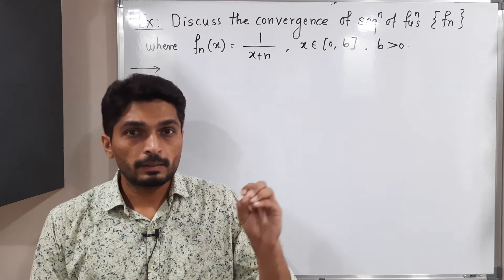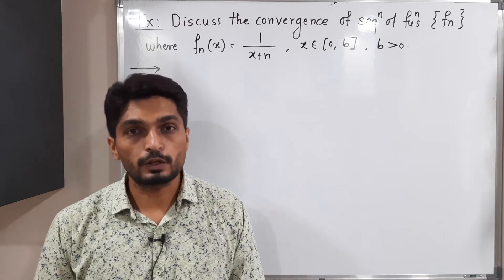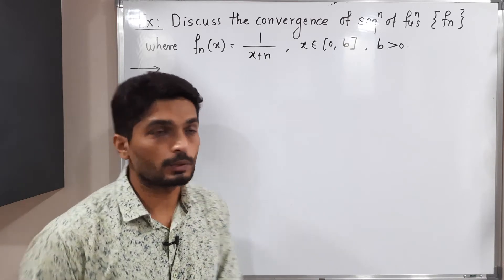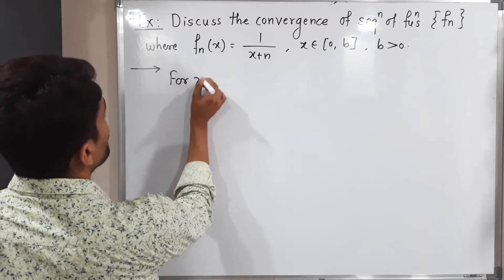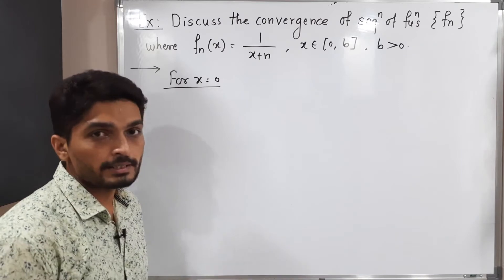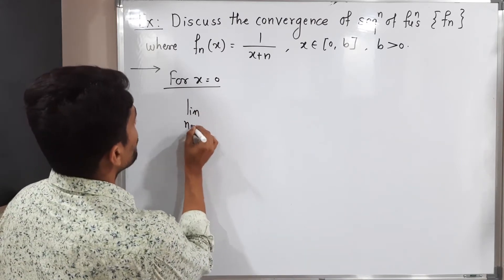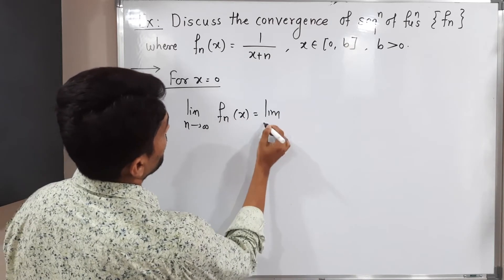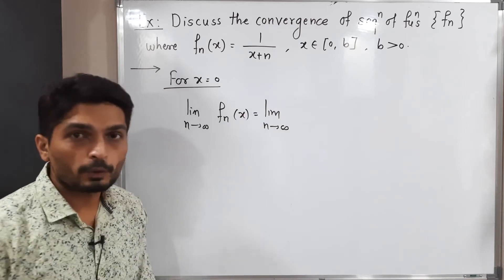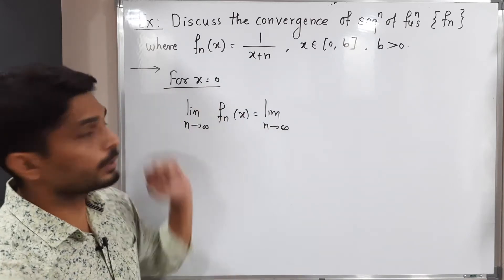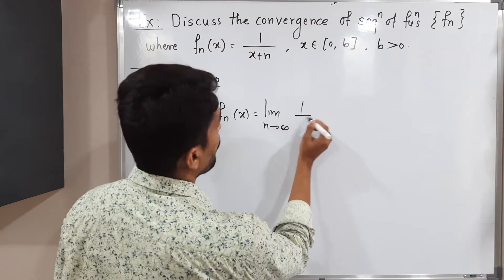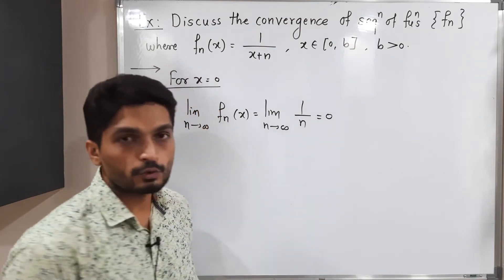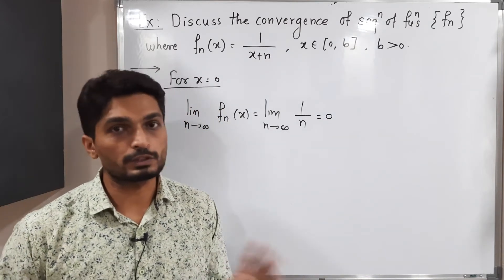We are going to find the limit of that sequence of functions. Let us first discuss the boundary point x = 0. For x = 0, the limit as n tends to infinity of fn(x) equals the limit of 1/(x+n), which becomes 1/n since x = 0. As n tends to infinity, 1/n goes to 0. So for x = 0, our sequence of functions converges to 0.